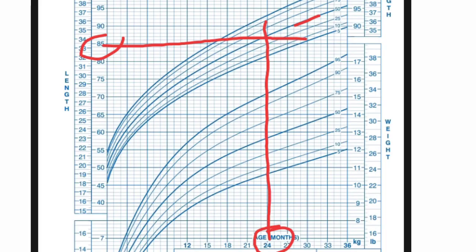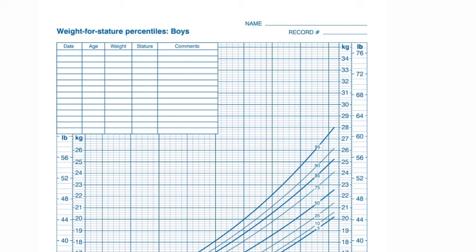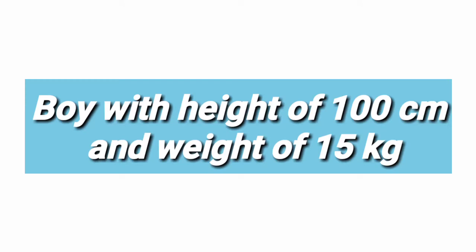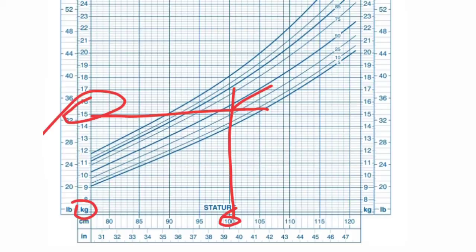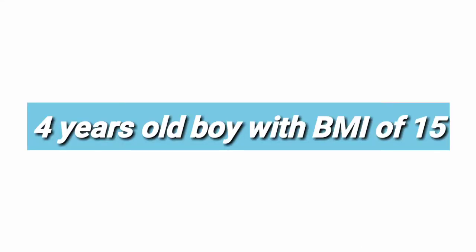For length-for-age: the age is 24 months and length is 85 cm. Combining both lines, it falls on the 50th centile. The next chart is weight-for-stature, that is weight-for-length. In one example, the stature is 100 cm and weight is 15 kg. We mark stature on the x-axis and weight on the y-axis, follow the centile line, and the weight-for-length falls between the 25th and 50th centile.